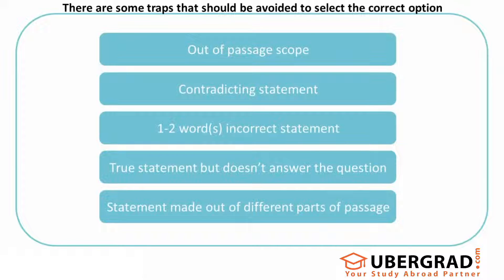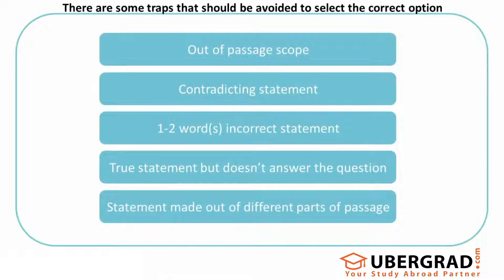The first type is 'out of passage scope.' These options — the statement would look true or seem to be true in the real world. Your mind is not just the passage that you have read; it has all the elements it would have seen and heard till now in life. The statement is set in such a way that it looks correct in general, but you won't find any supporting statement in the passage to justify it. It's out of passage scope, but for your mind it looks like a valid statement, which makes you feel it could be the correct answer — that's the trap.